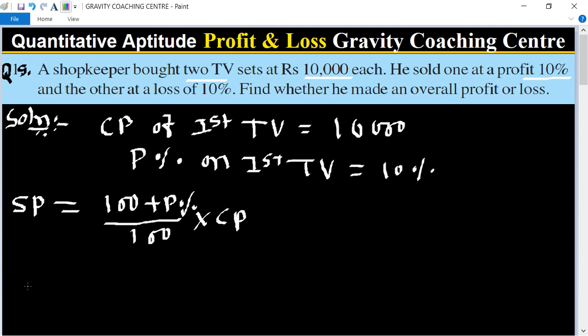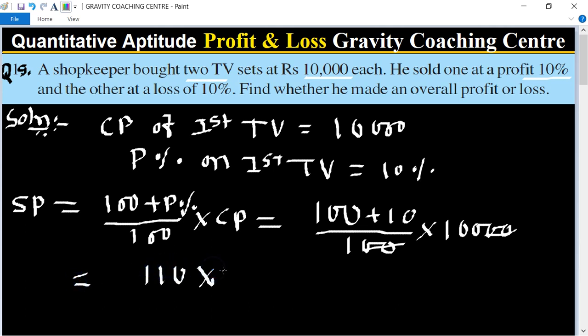So equal to 100 plus 10 upon 100 multiply 10,000. Equals 110 upon 100 equals 11,000.